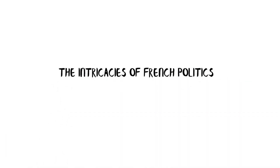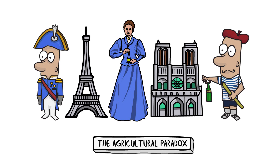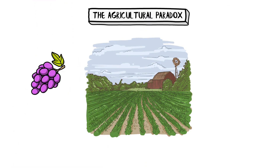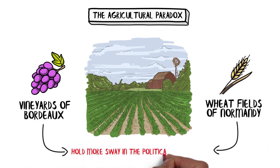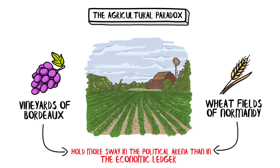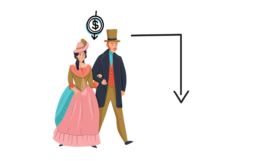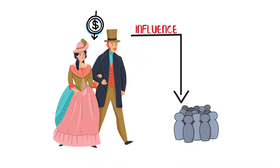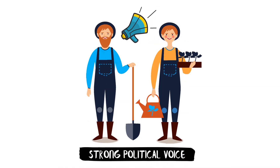The Intricacies of French Politics: The Agricultural Paradox. France, known for its rich cultural heritage and influential political history, presents a unique paradox in its agricultural sector. The vineyards of Bordeaux and the wheat fields of Normandy hold more sway in the political arena than in the economic ledger — akin to an old aristocrat who has lost much of his fortune but retains significant societal influence. The agricultural sector, while not the economic titan it once was, still possesses a strong political voice, reminding us that old habits die hard.